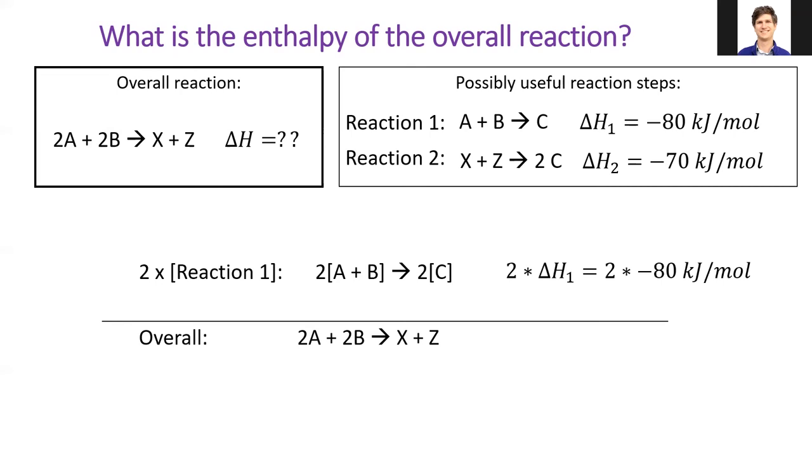So a good starting point is to double reaction 1, which also doubles its enthalpy. Now that I've got my reactants looking good, 2A and 2B, I shift my attention to the products, X and Z.